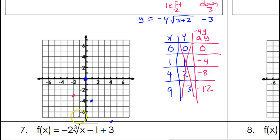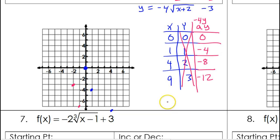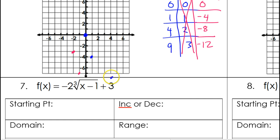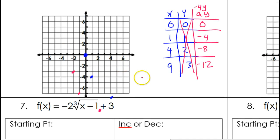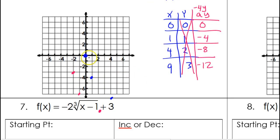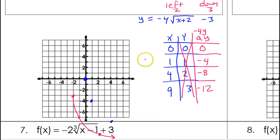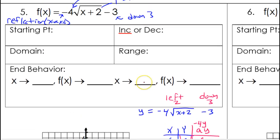Moving each point left 2 and down 3 gives us the new starting point and the final graph. The graph goes in this direction from the new starting point. So the starting point is at negative 2, negative 3. From left to right the graph is going down, so this function is decreasing.